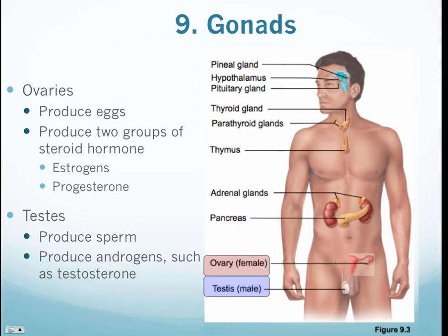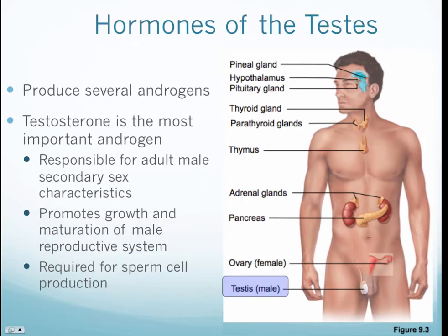Next are the gonads. In females, the ovaries produce eggs that develop in follicles and secrete two hormones: estrogen and progesterone. In males, the testes produce testosterone, which functions to produce sperm. The testes secrete several androgens, and the most important male sex hormone is testosterone. Though the adrenal cortex also produces some sex hormones, testosterone is responsible for adult male secondary sex characteristics — deepening of the voice, pubic hair formation, height, and maturation of sperm cells.